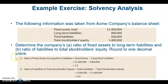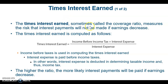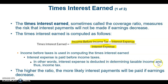Here's a practice exercise to work and check. Times interest earned — sometimes called the coverage ratio — tells us the risk that interest payments will not be made if earnings decrease. You take income before income tax from the income statement, add back interest expense, and divide by interest expense. The higher this ratio, the more likely interest payments will be made even if earnings decrease.